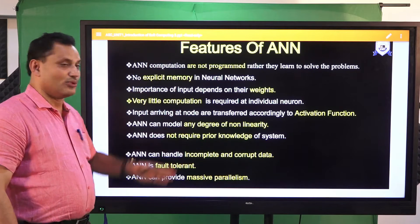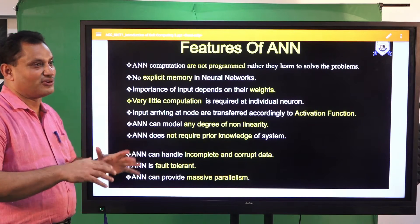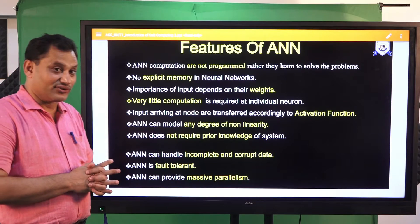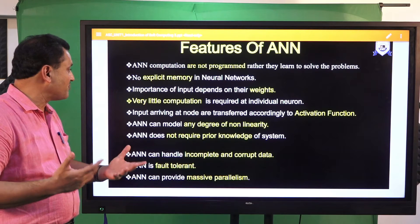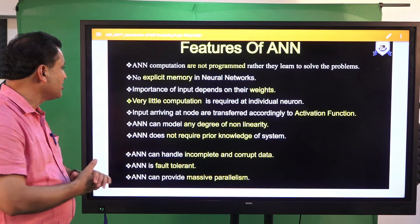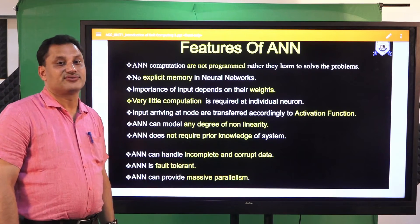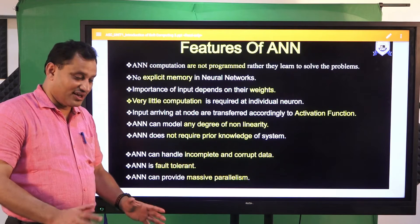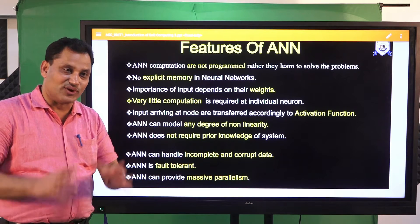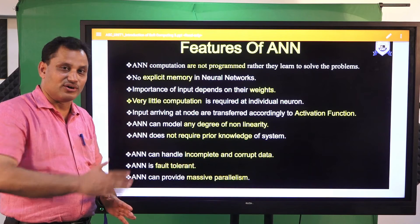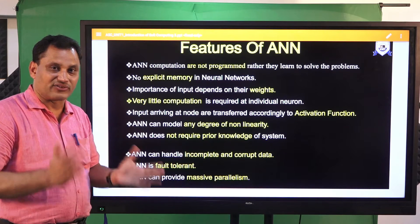There is no explicit memory in ANN. We have already discussed that memorization happens through synaptic weight — the synaptic strength. The importance of input depends on their weights. It is the strength or weight of the signal which decides whether the next neuron for which it is passing the signal will be in an excited state.